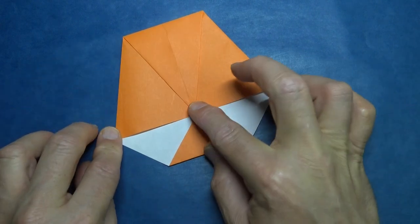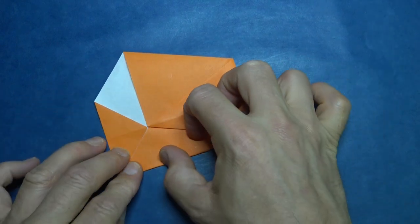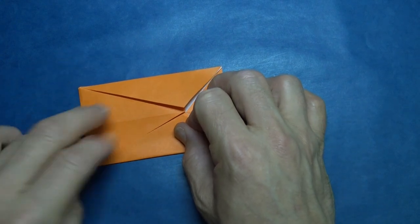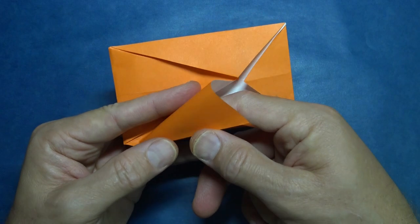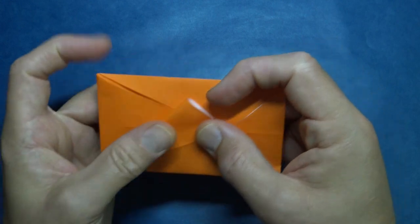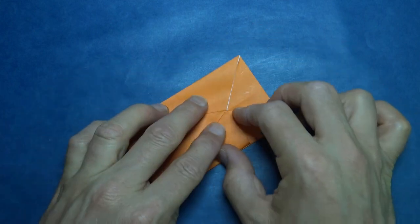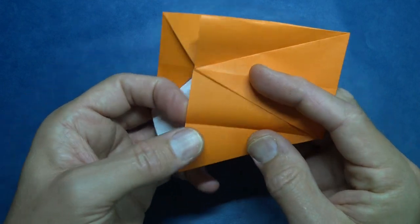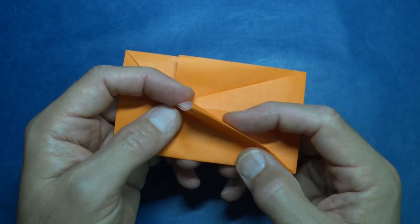And fold these two corners to the same point. Unfold and open here, push it in and squash. And fold the flap back down. And repeat. So unfold, open the pocket and squash. And fold back down.